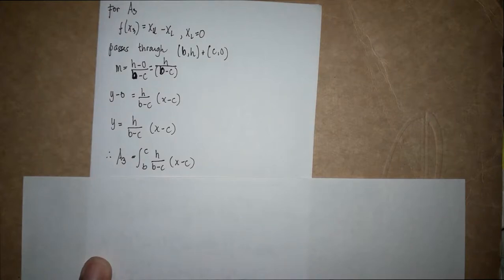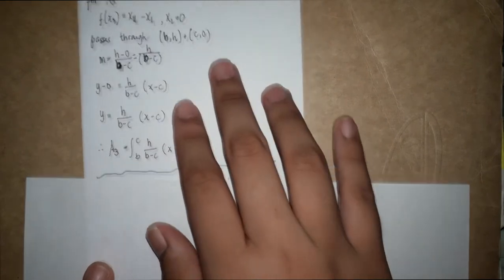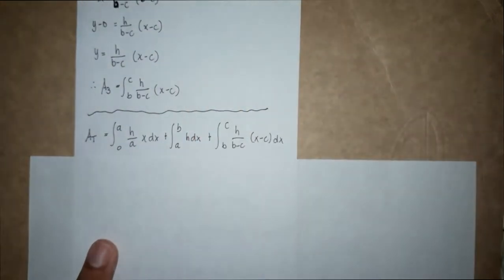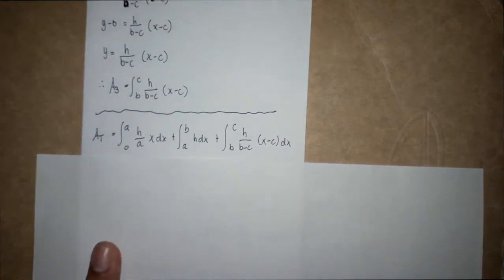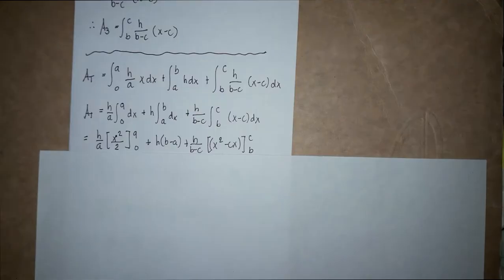The total area is equal to the integral of (h/a)x dx integrated from zero to a, plus the integral of h dx integrated from a to b, plus the integral of h over (b minus c) times (x minus c) integrated from b to c.